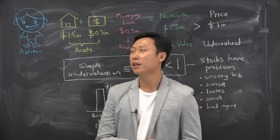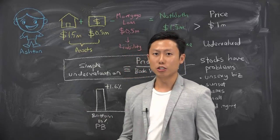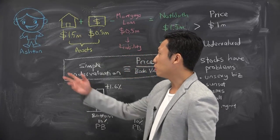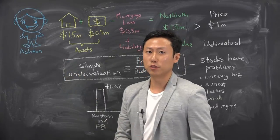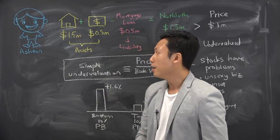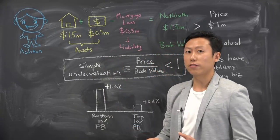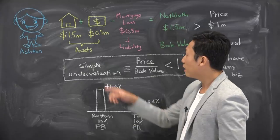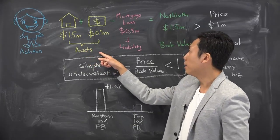Let's start with the simplest way and I would like to use analogies. Let me introduce this guy to you called Ashton. Imagine that he has a house which is worth $1.5 million and he also has cash worth $500,000 in the bank. This forms his assets.